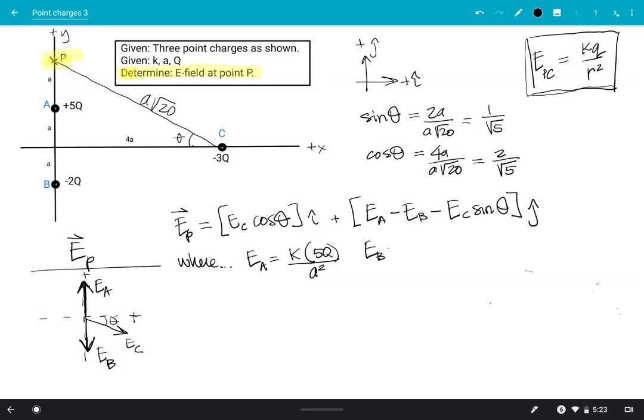Moving on, magnitude of field of B at the point of P K times magnitude of particle B, drop the sign, 2Q, over the distance between the particle and the point of interest squared. So that distance, the distance between particle B and point P is 3A. So that'll be 9A squared.